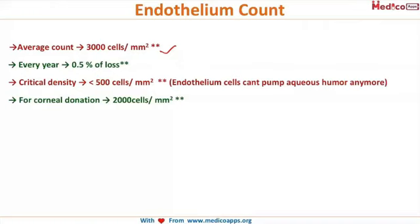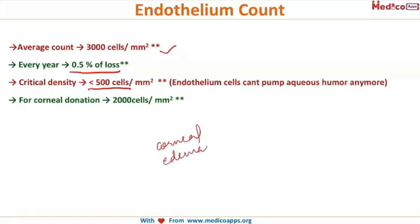Every year, just like any other epithelium or endothelium in our body, there is a 0.5 percent physiological loss of cells. However, the critical density to maintain normal vision and transparency is at least 500 cells per millimeter square. If the cell density reduces below that, the patient will develop corneal edema because the cornea can no longer pump the aqueous humor out due to insufficient endothelial pumps.